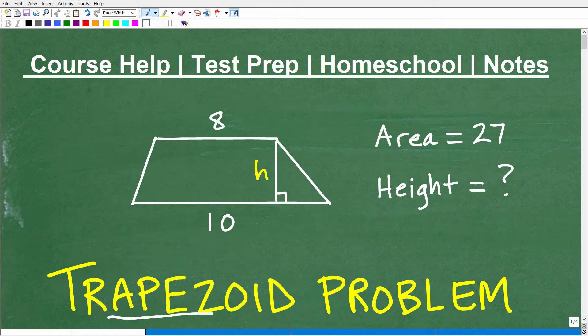Okay, let's go ahead and tackle this trapezoid problem. Now, a trapezoid is a special type of quadrilateral, and a quadrilateral is a four-sided polygon. But hopefully most of you just recognize that this shape is what we call a trapezoid.